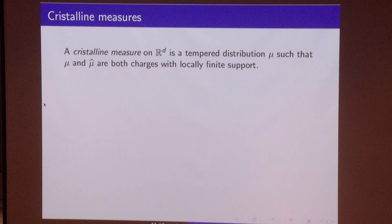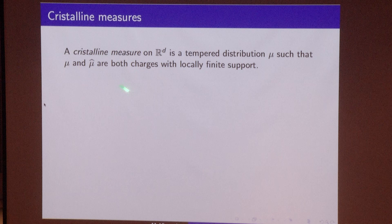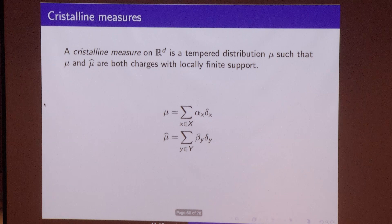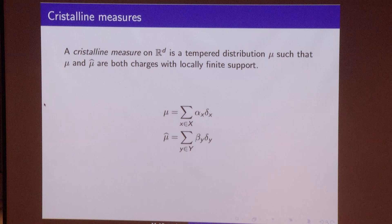Another way to look at this result is as a construction of crystalline measures. A crystalline measure in R^d is a temperate distribution such that mu itself and its Fourier transform are both charges with locally finite support — in other words, mu is a sum of delta functions, and its Fourier transform also has to be a sum of delta functions.